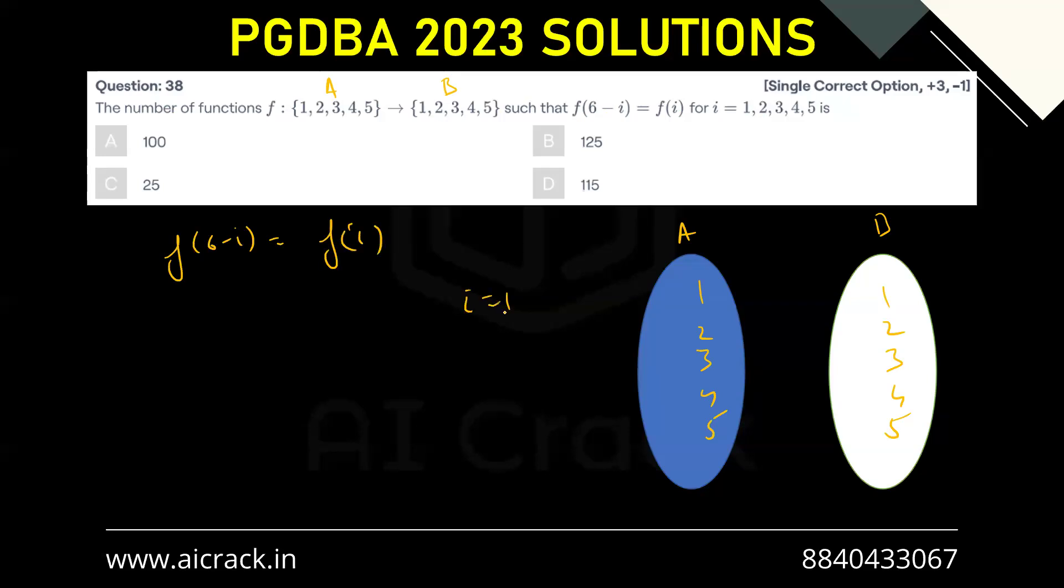So for i equals 1, we'll be getting f(5) equals f(1). For i equals 2, we'll be getting f(4) equals f(2). For i equals 3, we'll be getting f(3) equals f(3). Now this is obvious that we have just f(3).